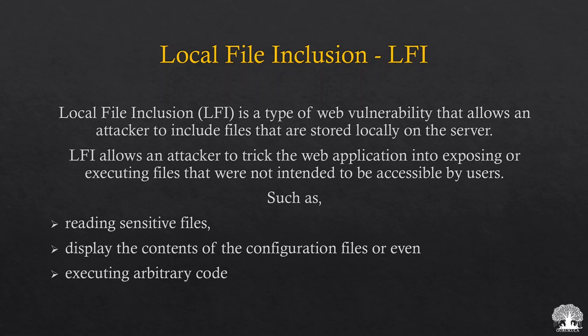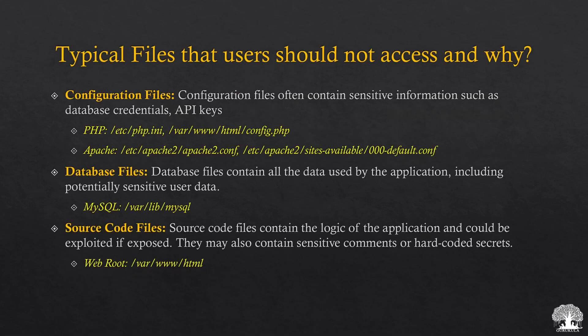When we say critical files, there are certain files stored in web servers that should not be accessed through any vulnerability. First are configuration files, which contain database credentials and API keys. These are usually stored at specific locations, though some developers may move them elsewhere for safety. Database files are another area of interest for attackers.